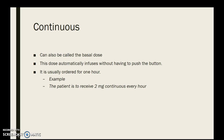Continuous can also be called the basal dose. This is automatic — they get it every hour, they don't have to do anything, they don't have to press anything. The machine is going to give them medication automatically. It's usually ordered per hour, so the patient gets two milligrams continuous every hour — that means every hour they get two milligrams of the medication whether they push a button or not.